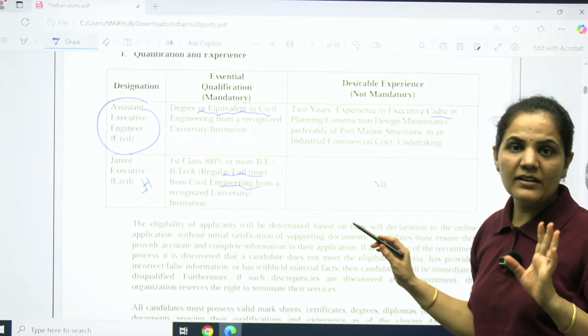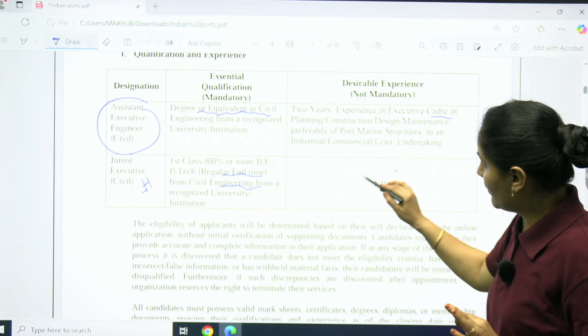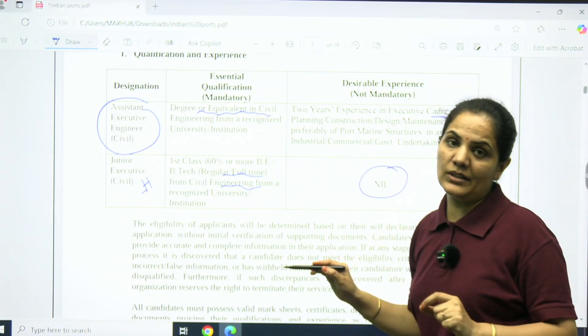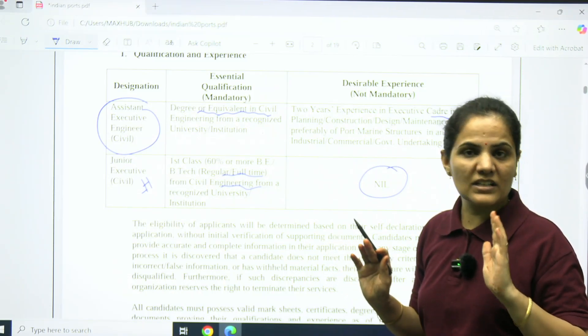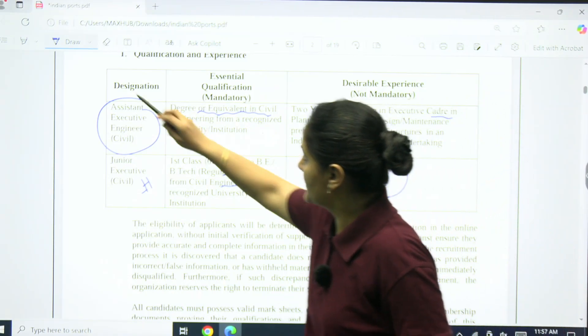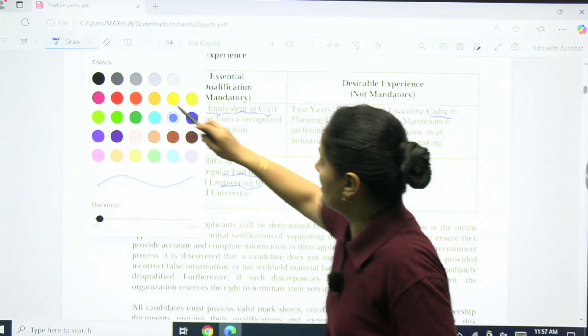For Assistant Executive Engineer, they want two years experience in executive planning and construction. For Junior Executive Civil, there is no requirement of experience, so fresh B.Tech students are also eligible.